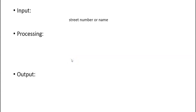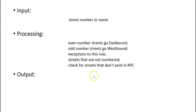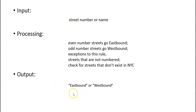Suppose we want to know which streets in New York City go eastbound and which go westbound. The input is the street number or name. The facts to consider when creating the code: even-numbered streets go eastbound, odd-numbered streets go westbound. There are some exceptions to this rule, streets that are not numbered should be considered, and we also need to check for streets that don't exist in New York City. The output of this program is whether eastbound or westbound.